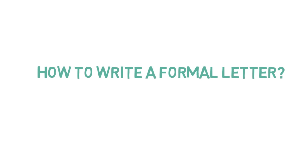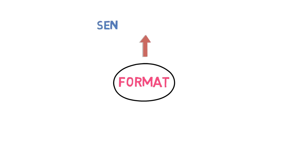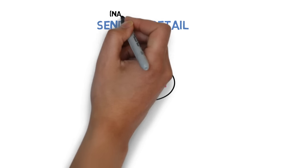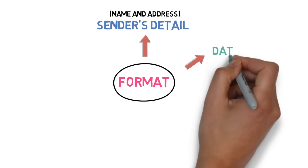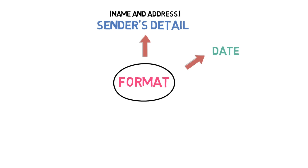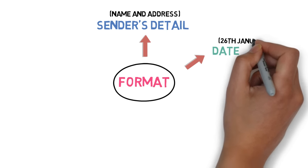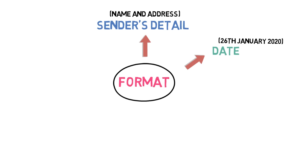In this video, we will understand how to write a formal letter. A formal letter must have 8 things in it. Number 1 is sender's details — the sender's name and address, as he is the one writing the letter. Number 2 is the date on which the letter is written. For example, if you are writing the letter on 26th January 2020, you write: 26th January 2020. This is the most common format used.